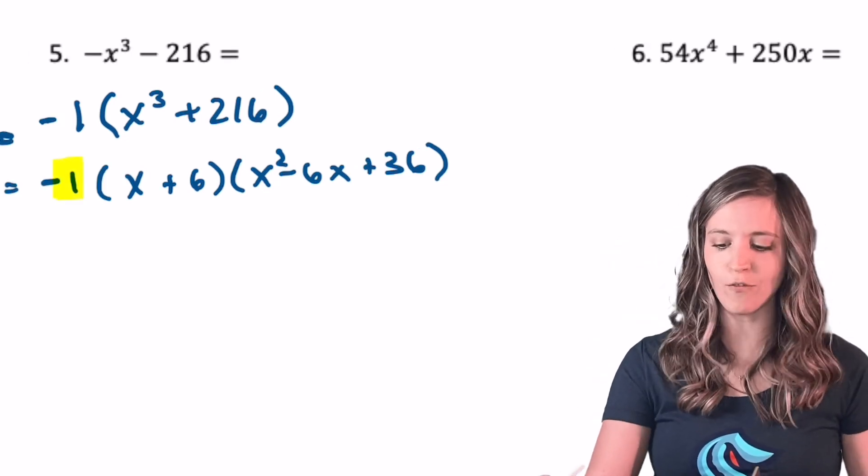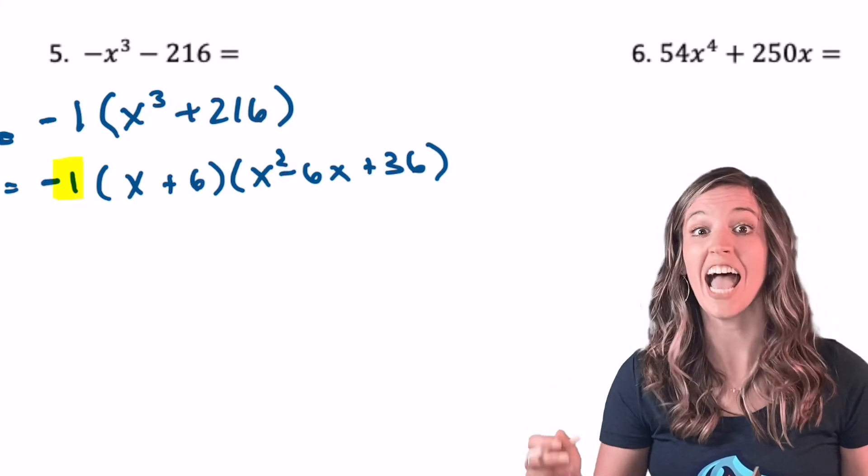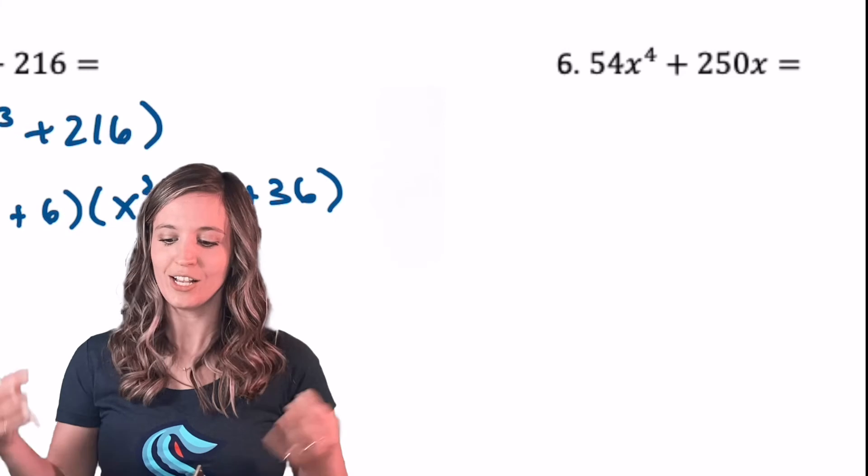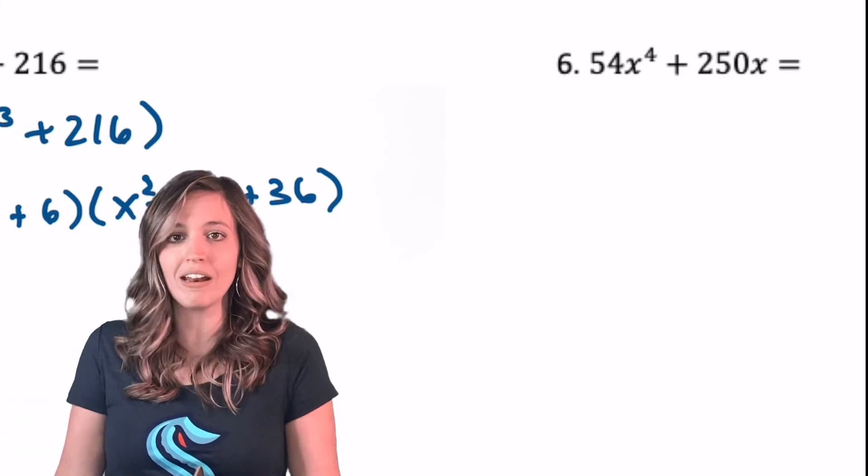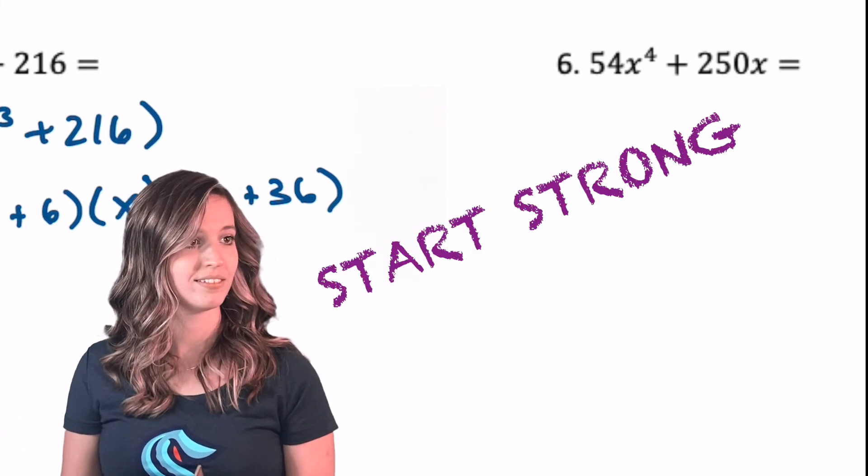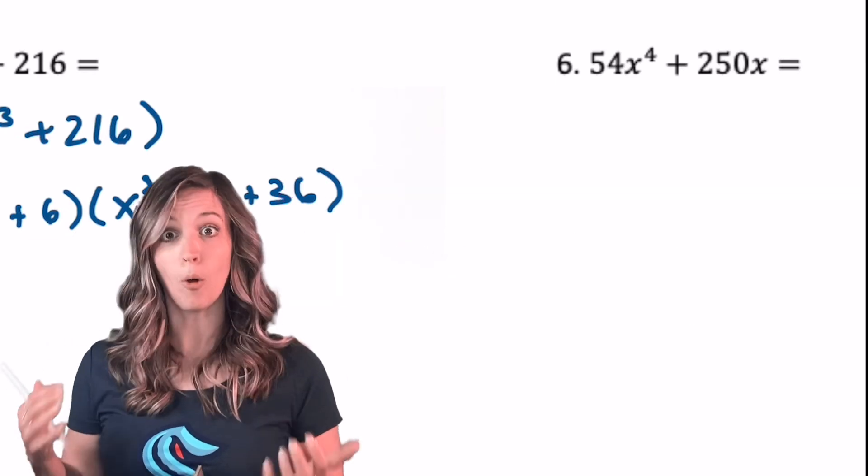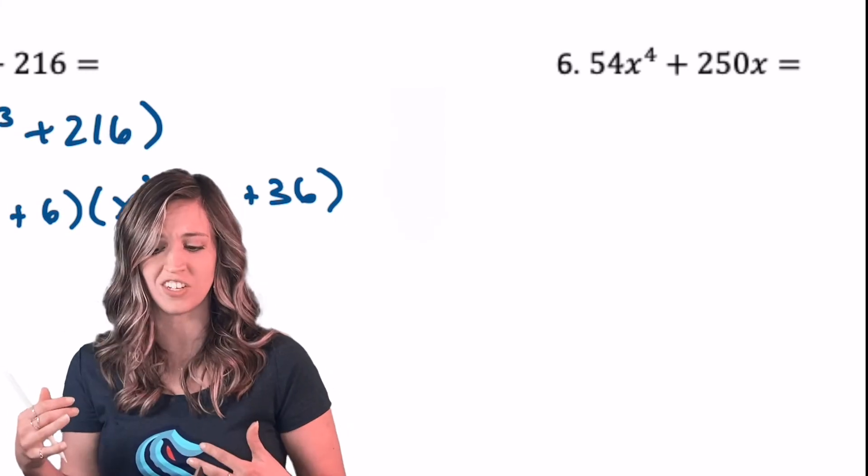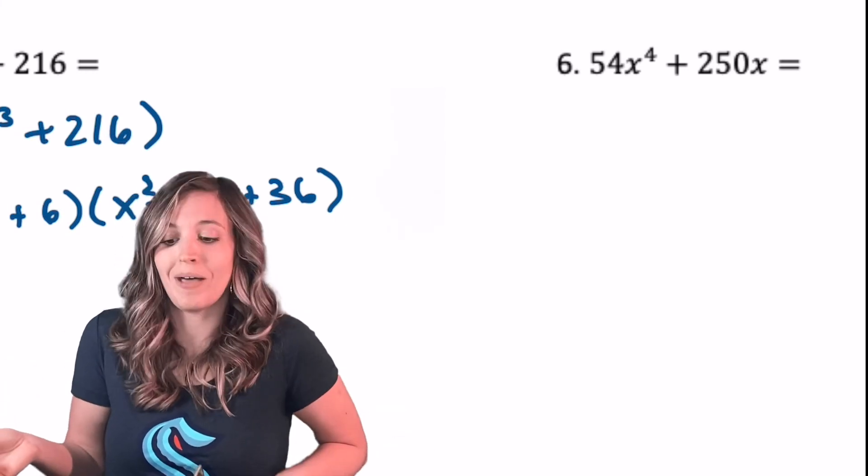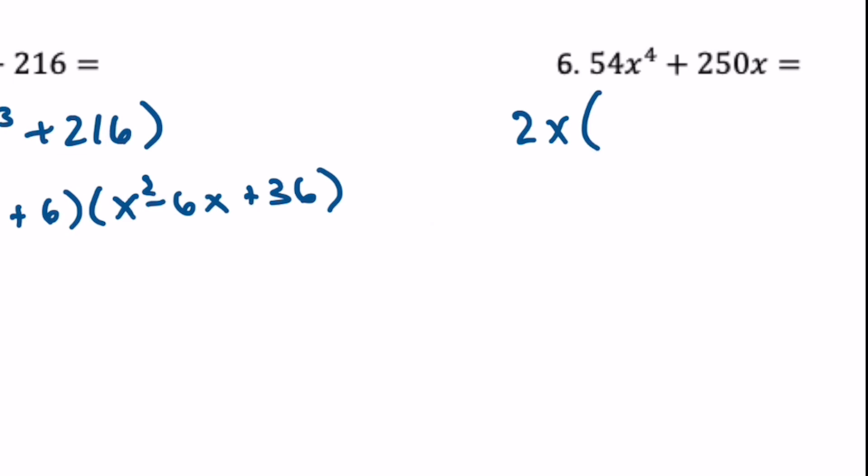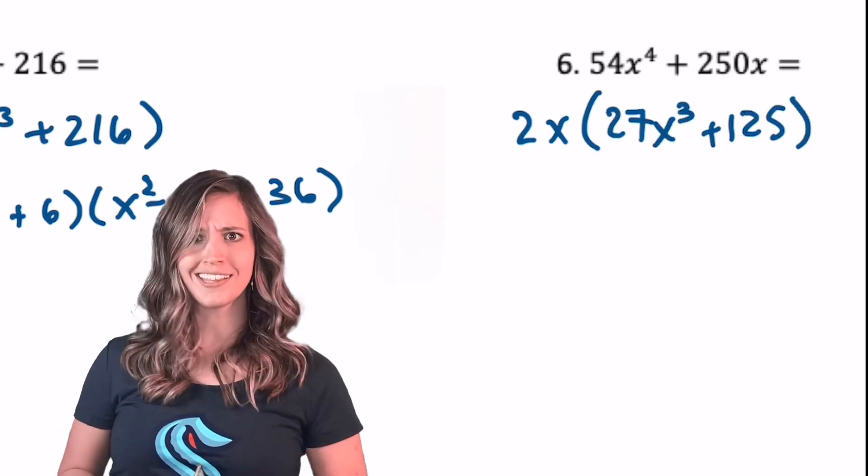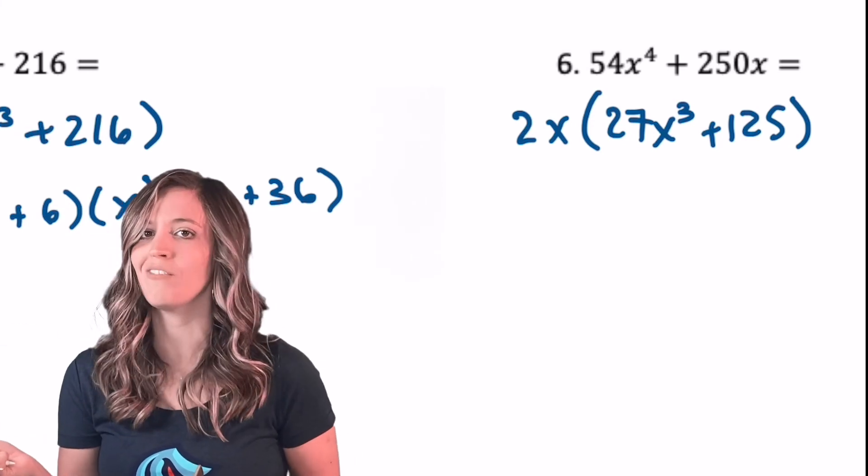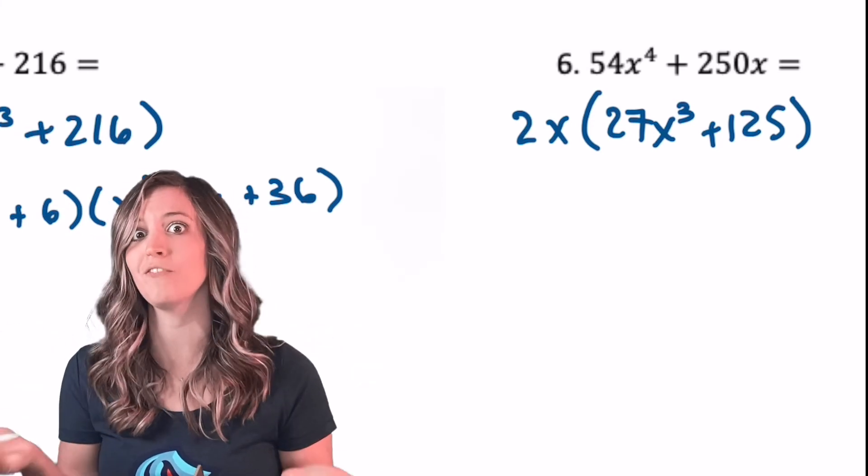All right, as we look at number six, 54x to the fourth plus 250x. Whoa, I've got a quartic binomial here. So quartic, what am I going to do? I don't know how to factor quartics yet. Start strong, start strong. Look, both terms have an x in them, so I can factor out an x. Does anything else factor out? 54 and 250, they're both even, so they're divisible by two. Well, it's a good thing I pulled out a GCF here, because now I have 27x cubed plus 125 as my binomial, and those are both perfect cubes.